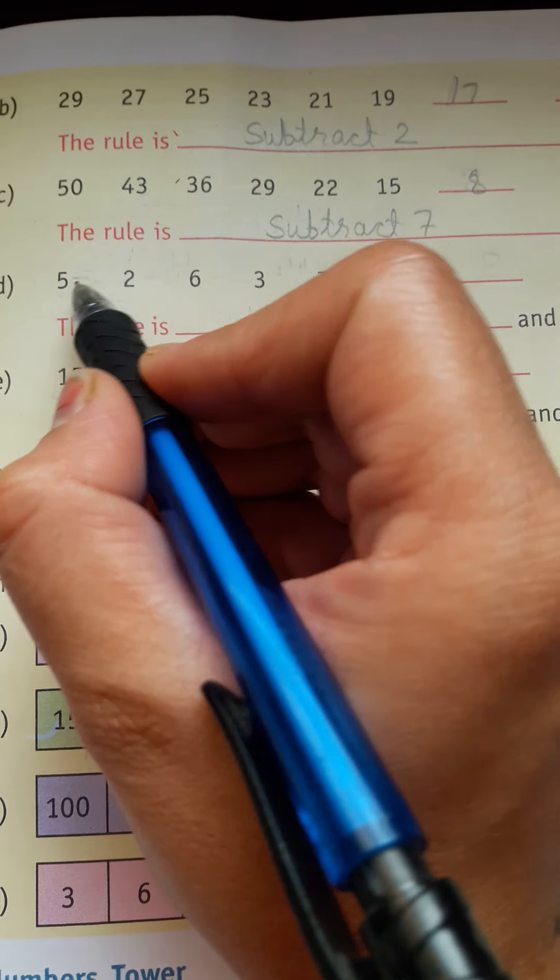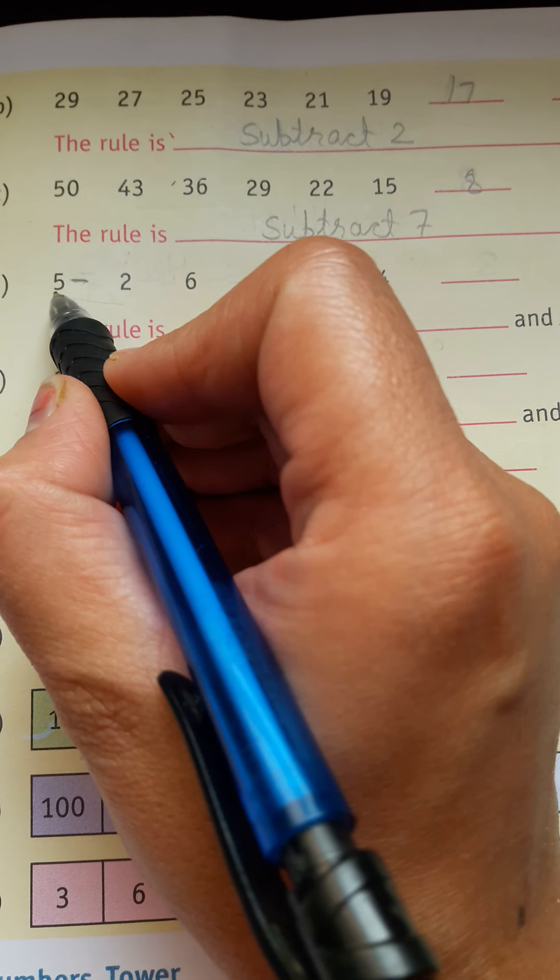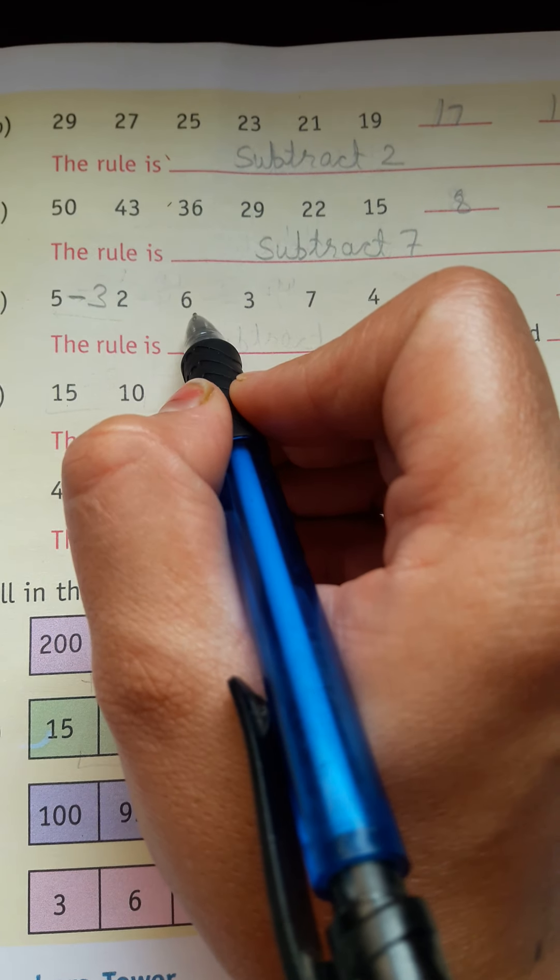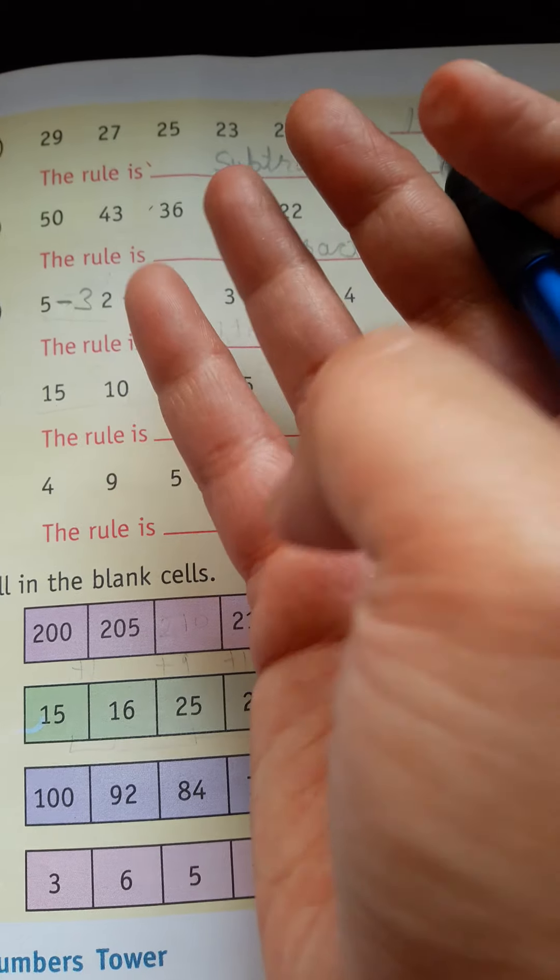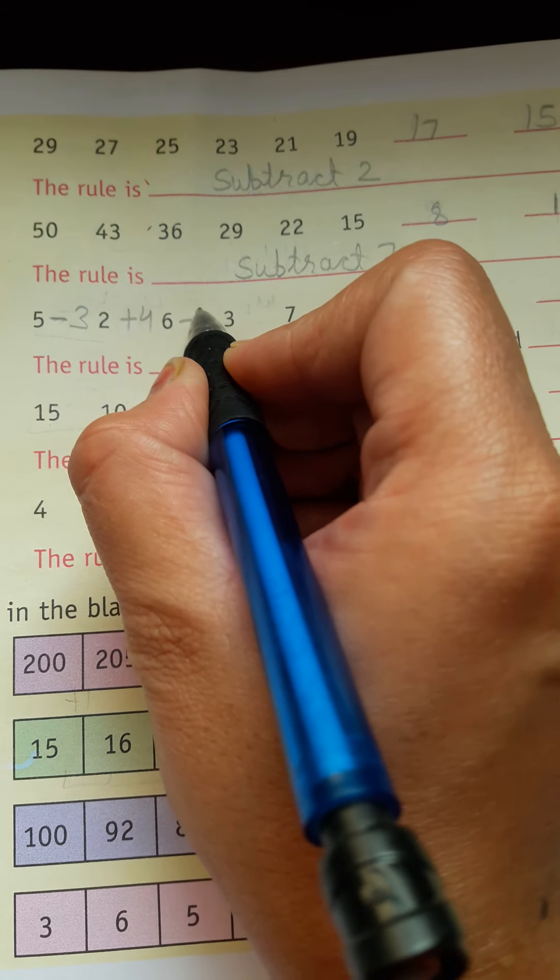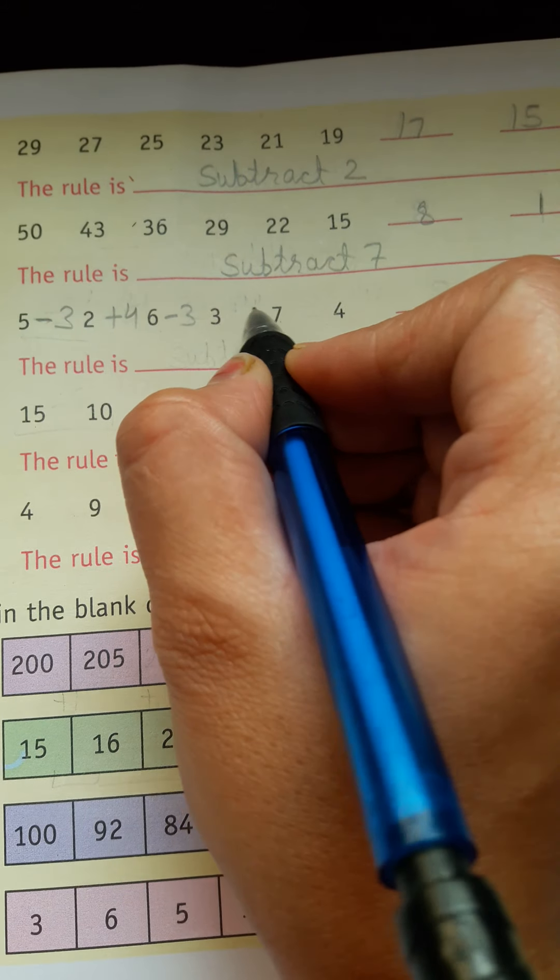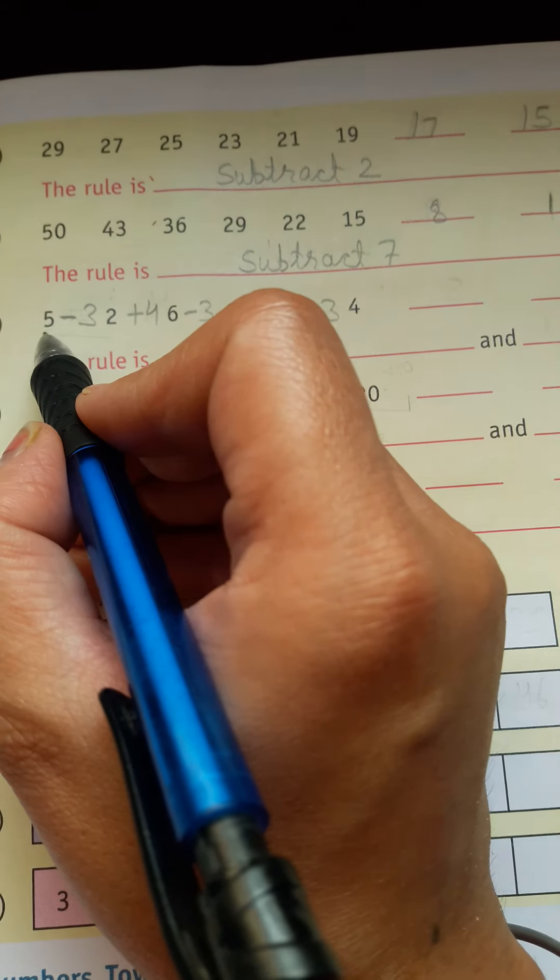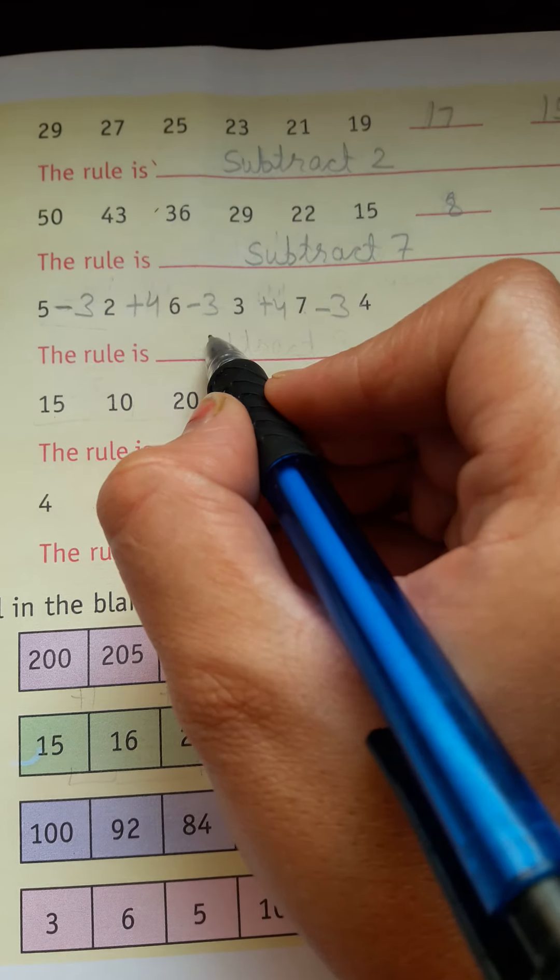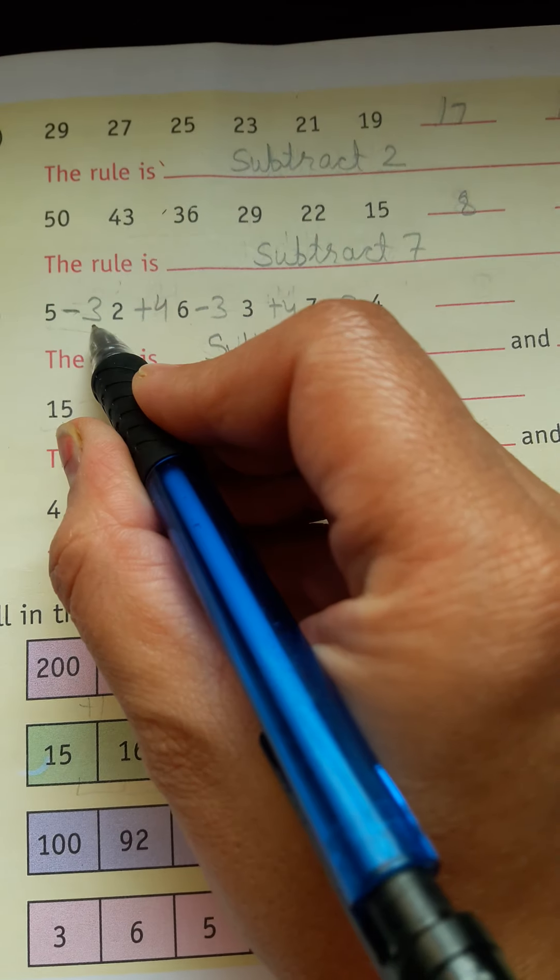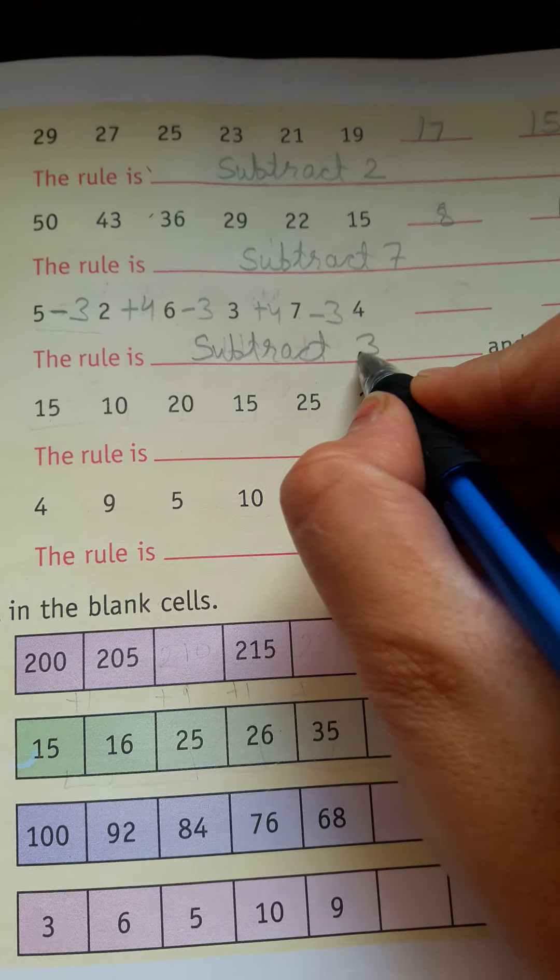We are going to minus. 5 minus 2 is 3. Then we see minus 3, then we see plus 4. Minus 3 rules follow - one is minus and one is plus. First rule is subtract 3, then subtract 3. Second rule is add, then add 4.